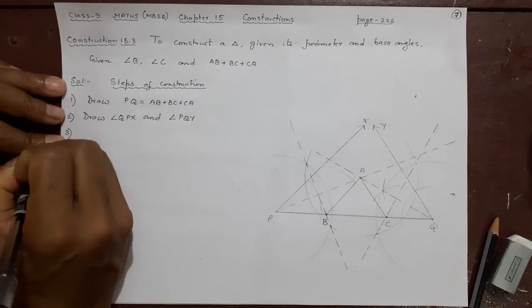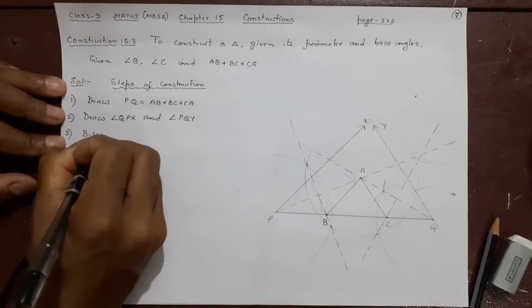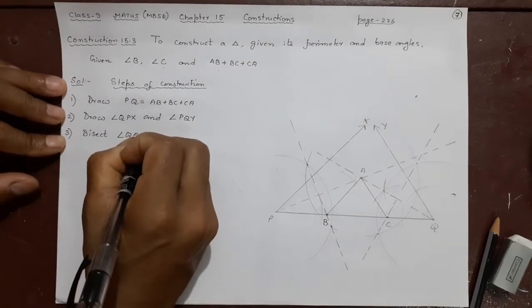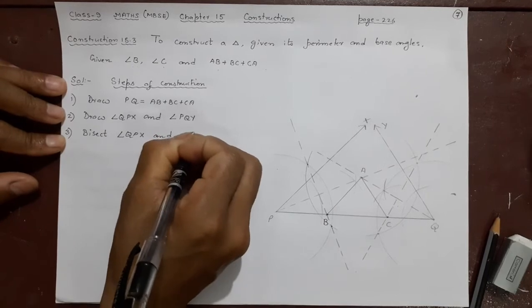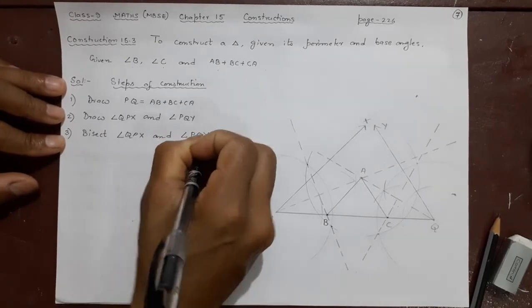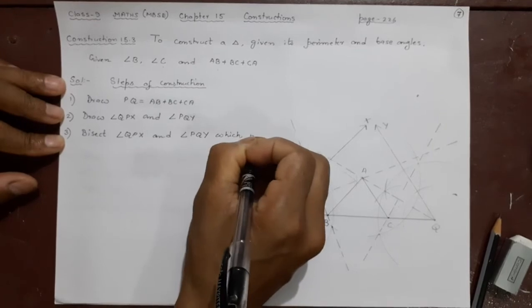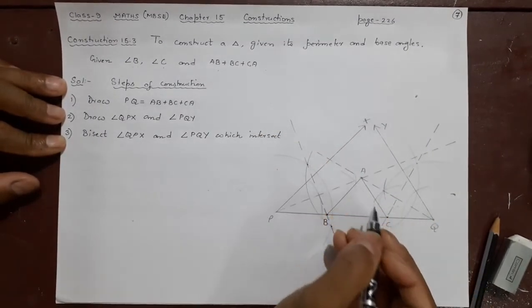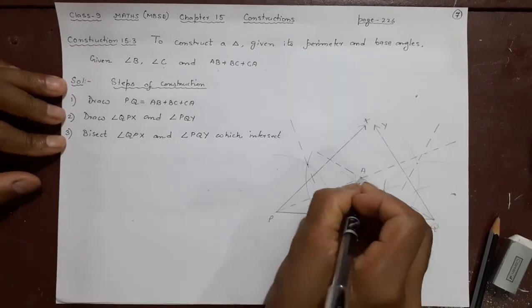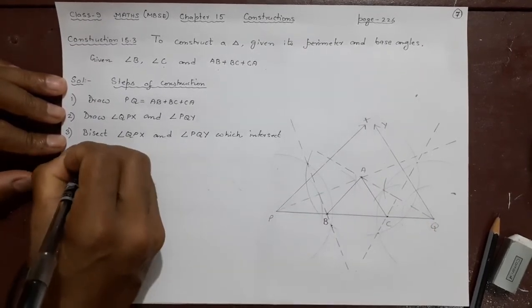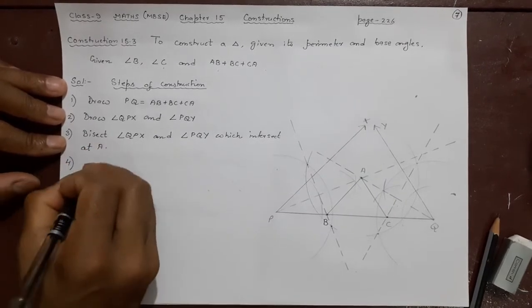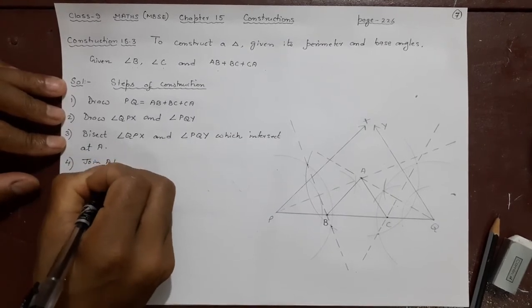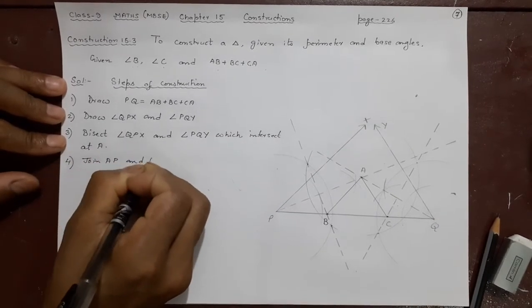Third one, what you did? Bisect. Remember, bisect this time angle QPX. You did this and angle PQY which intersect when you are bisecting them. They were intersecting where they were intersecting at A. Intersect at A. After that, number four. Now join AP and AQ.